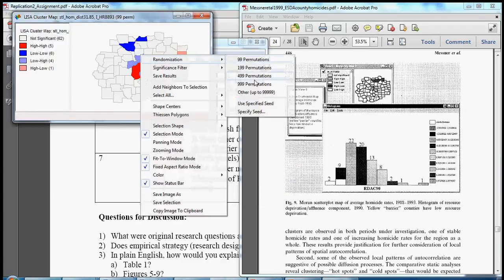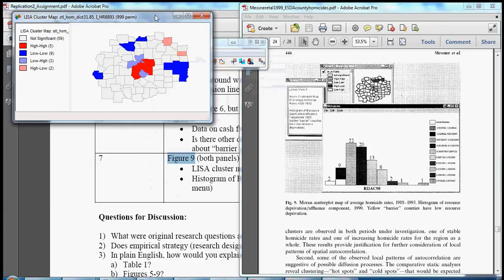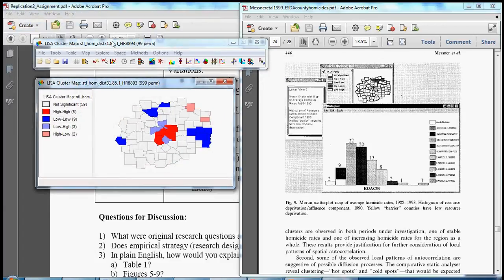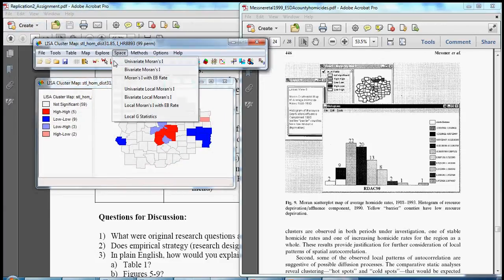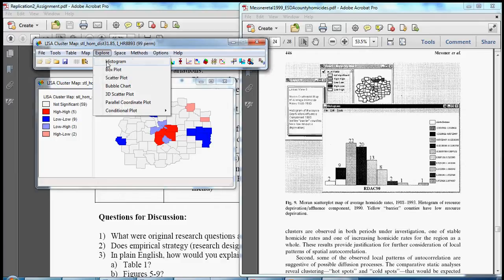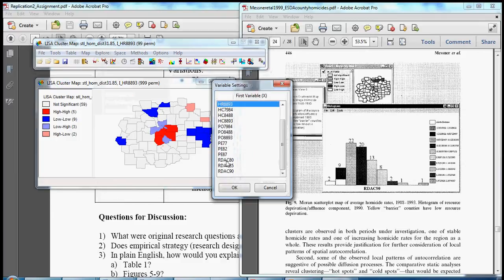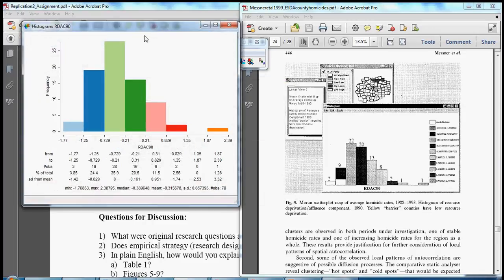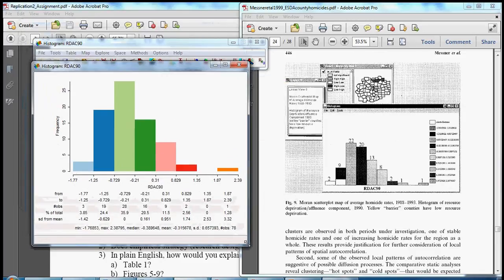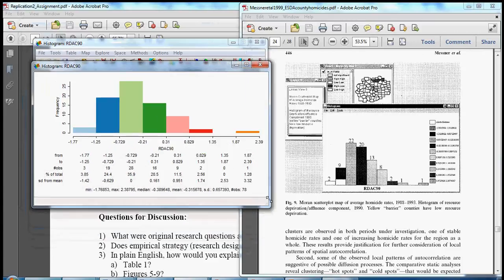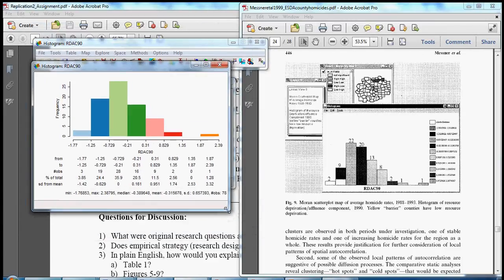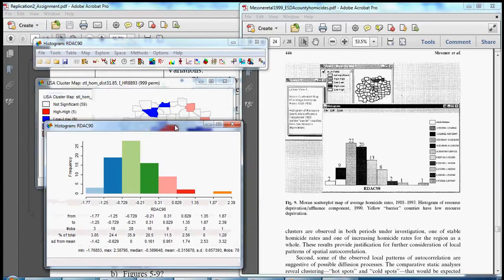Go to space univariate to generate our LISA cluster map of homicide rates 88-93. Let's just generate the cluster map, do a thousand randomizations. And if we go to explore, our first option is histogram, and we want resource deprivation affluence component from 1990. And there it is.